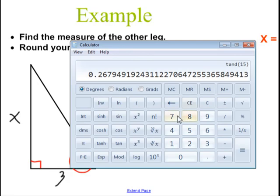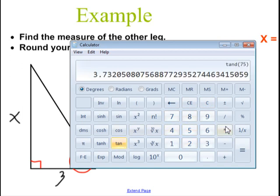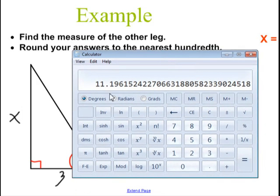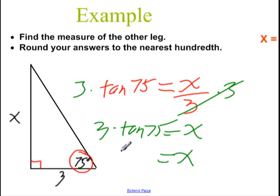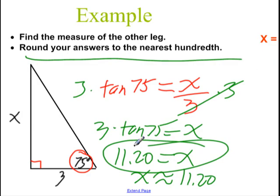I get my calculator, put in 75, find the tangent, and then multiply that by 3. I see that it's about 11.196. It's said to the nearest hundredths, so that rounds up to 11.20. So x is approximately equal to 11.20. You can use trigonometry to find the missing value in a right triangle because your calculator has all those ratios built into it.